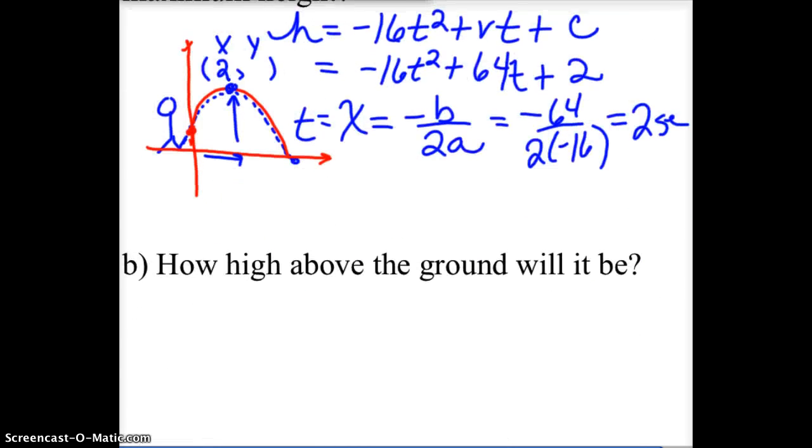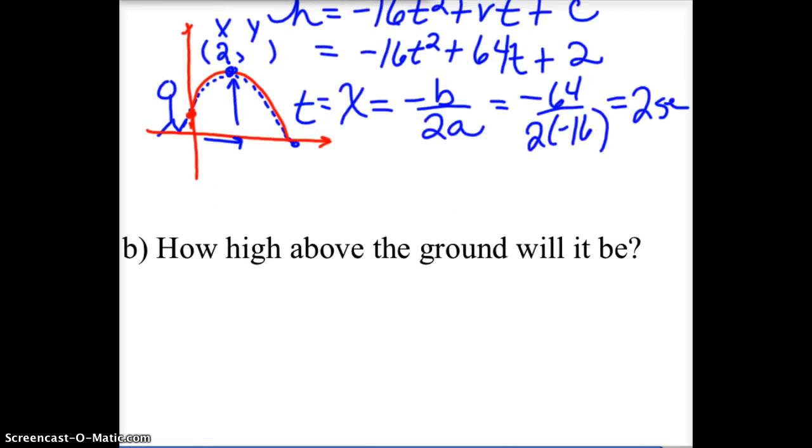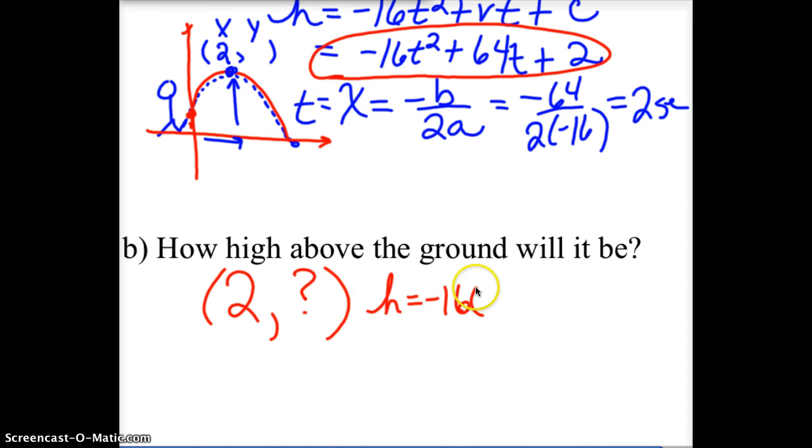And the next question says, well, how high did it get? Well, again, in order for me, I know that after 2 seconds it peaked out. How high did it get? I go back to my model, and I say its height is negative 16 times t squared plus 64 times the time plus 2. And I want to know how high it gets after 2 seconds. And when you go plug that in on your calculator, you're going to get 66 feet. So the maximum height is 66 feet.